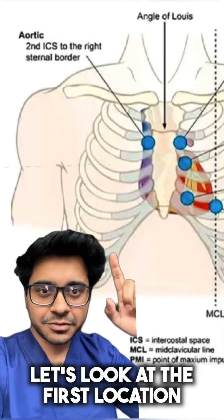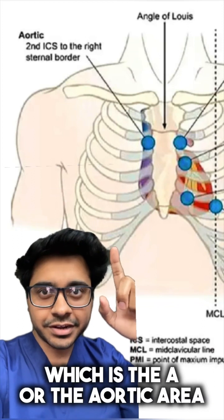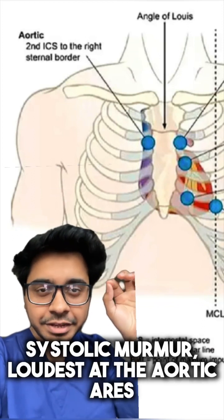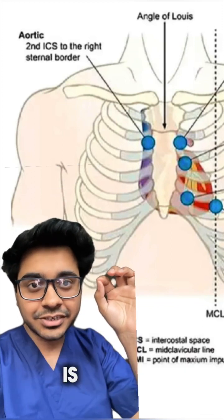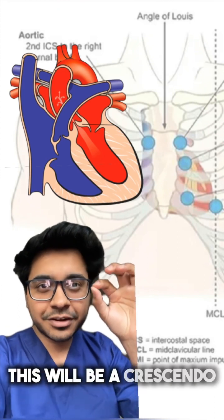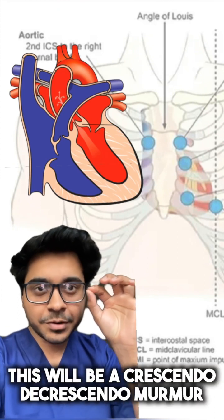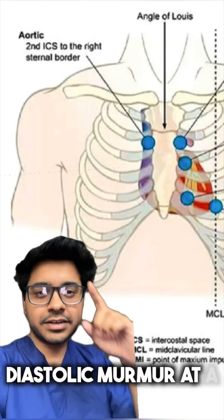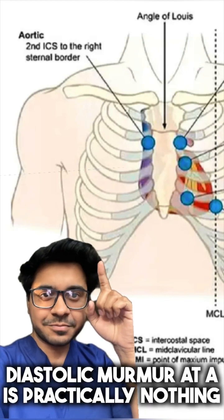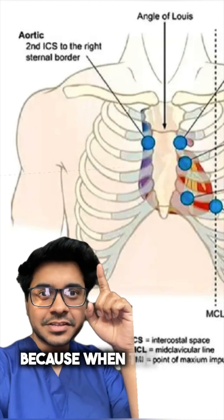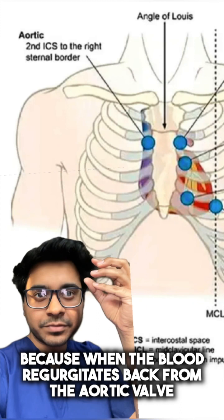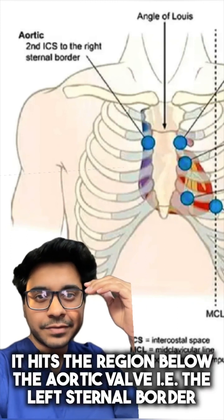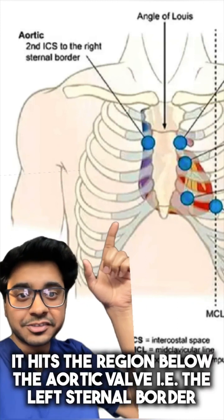Let's look at the first location: the aortic area. A systolic murmur loudest at the aortic area is aortic stenosis — a crescendo-decrescendo murmur also heard in the carotids. A diastolic murmur heard at A is practically nothing because when blood regurgitates back from the aortic valve, it hits the region below the aortic valve, that is the left sternal border.